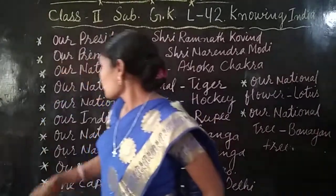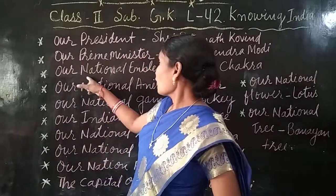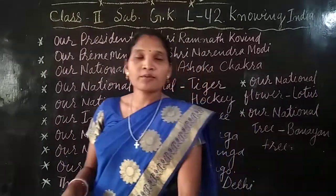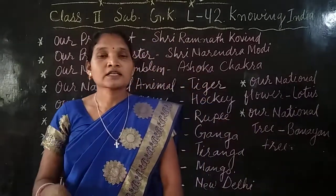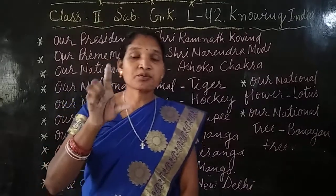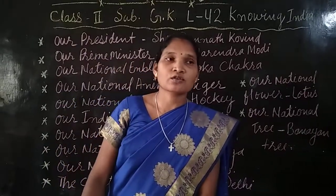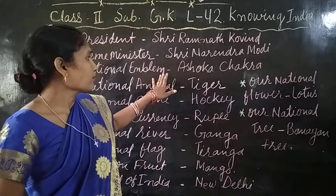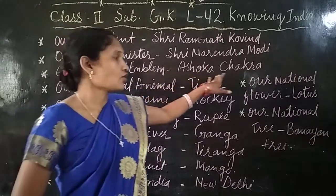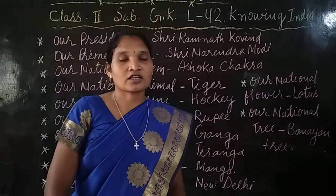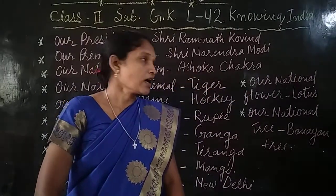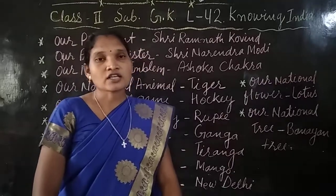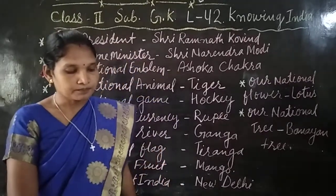Then comes our national emblem. National emblem means Rashtriya Pratik or Rashtriya Chinh as it is called. So what is our national emblem? Our national emblem is the Ashoka Chakra.